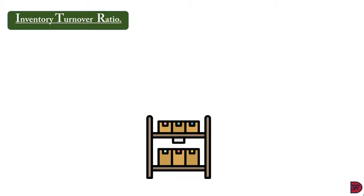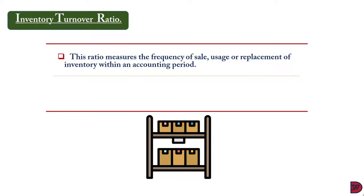Now we come to the inventory turnover ratio. This looks at the frequency of sale, usage, or replacement of inventory within a particular accounting year. The first ratio looked at the number of days it takes for an inventory to be sold. Here, it looks at the number of times that inventory is sold, used, or replaced within the year.